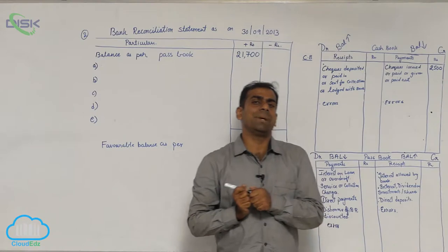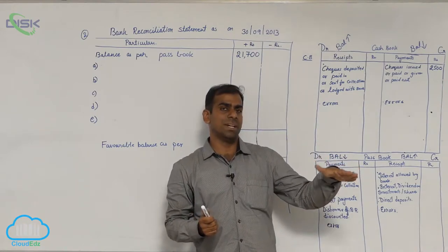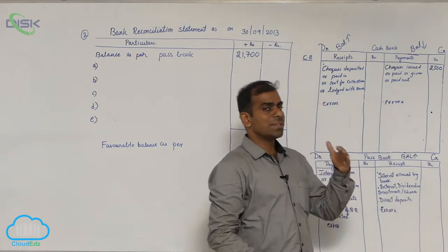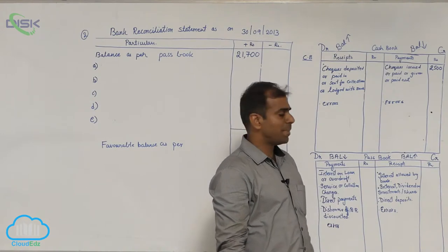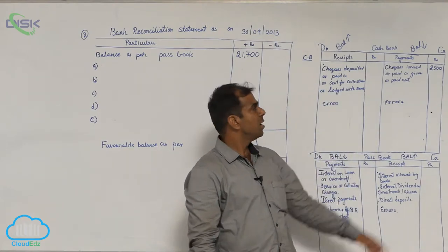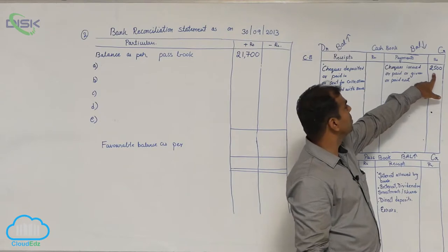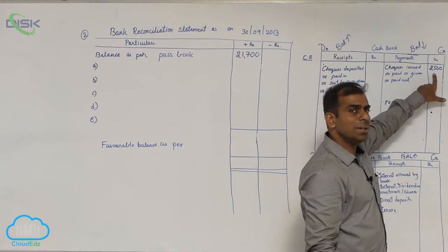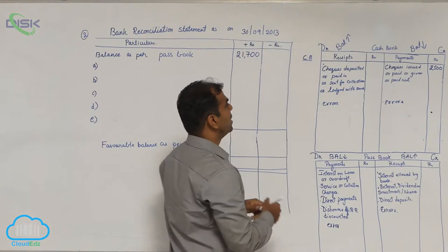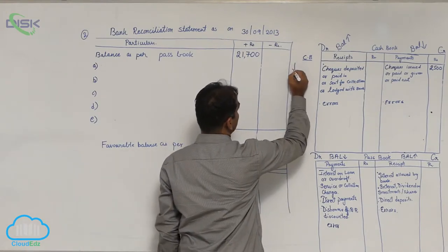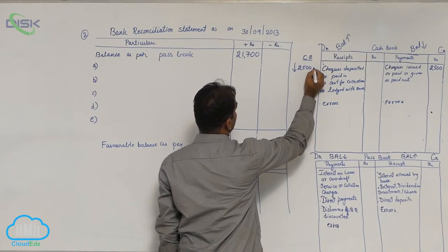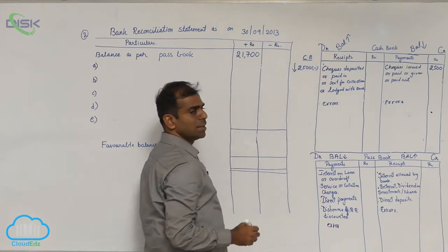Cheques issued but not presented for payment means you gave a cheque to someone and that person did not go and take the money from the bank. Naturally, when that person did not take money from the bank, the bank will not make any entry. Now let us find the impact: as a result of 2,500 being entered on the payment side, the cash book balance should come down. Balance coming down means we should put the arrow down — so minus 2,500.